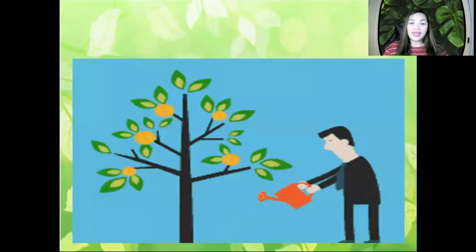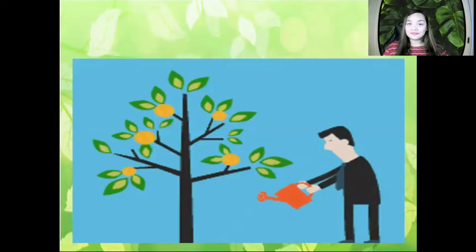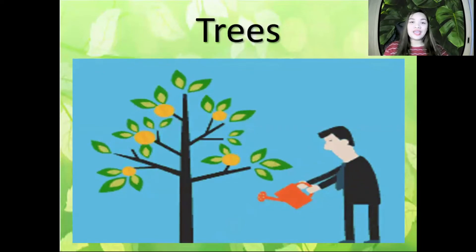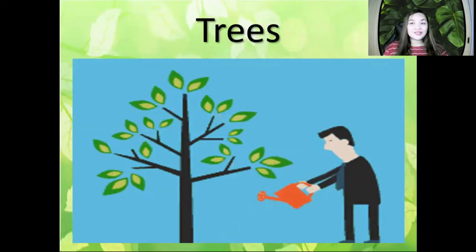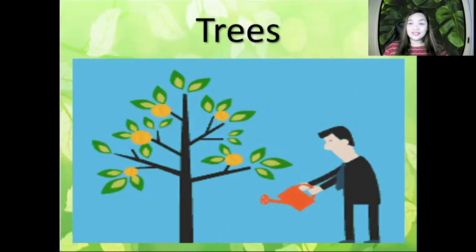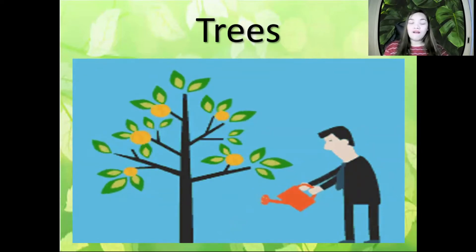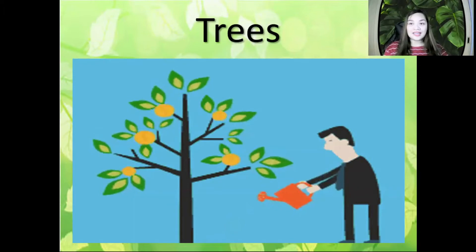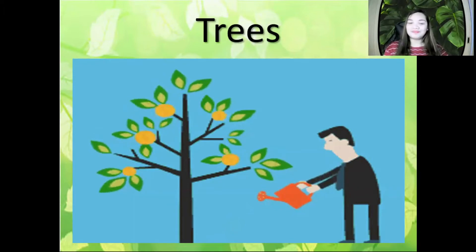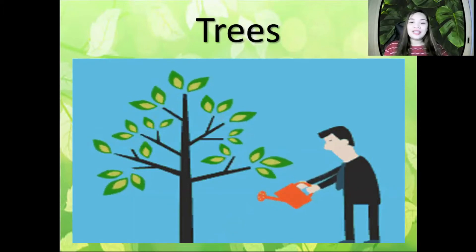Next, we have Trees. Everybody say Trees. What is it? It is tree. Let's spell trees together: T-R-E-E-S. Very good.